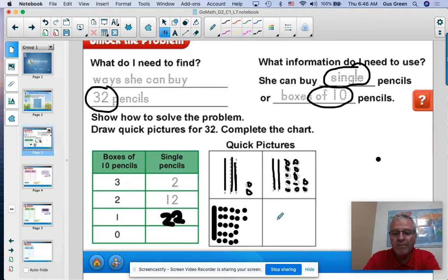And the last one, if you only bought singles, she would need to buy 32 singles. So let's count those out. 1, 2, 3, 4, 5. And when you're doing this many, it's a good idea to keep them organized.